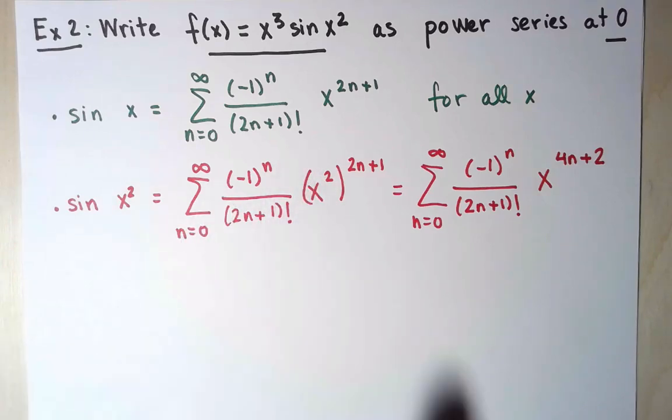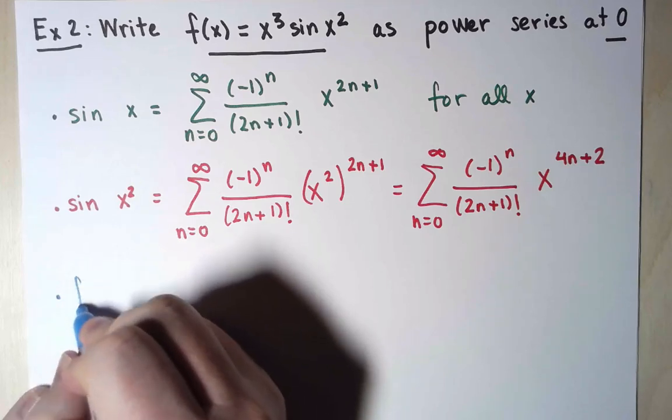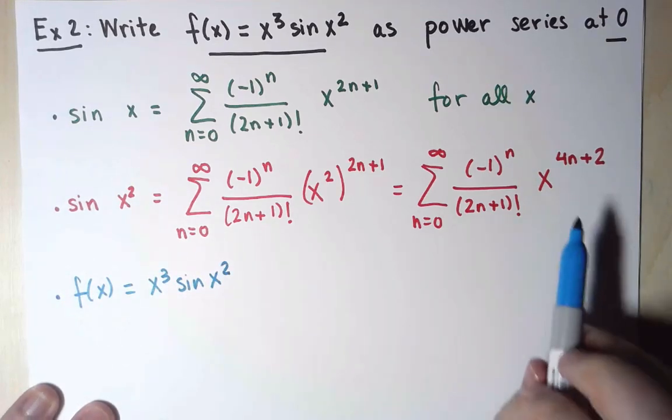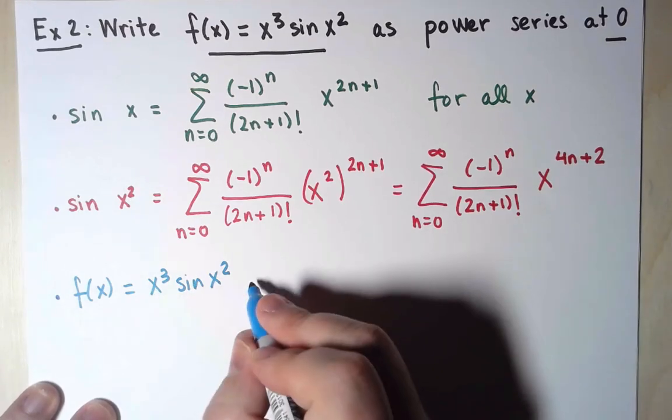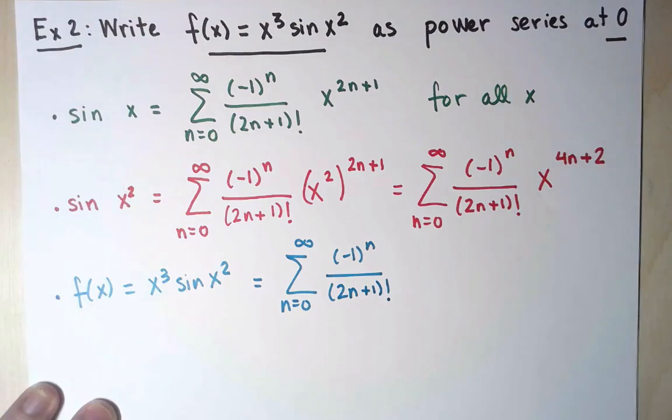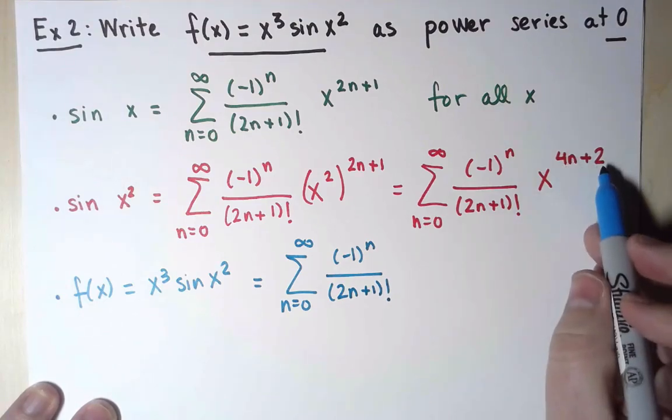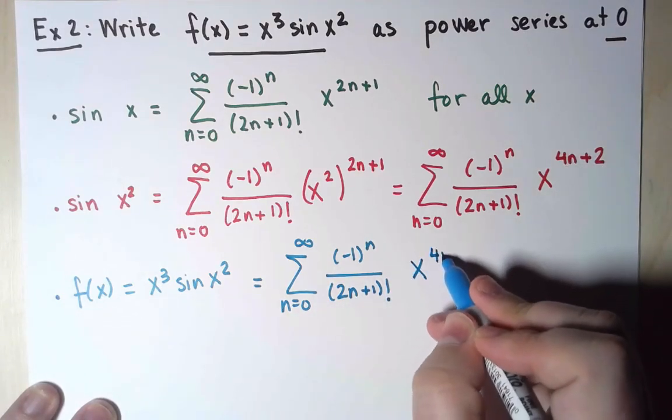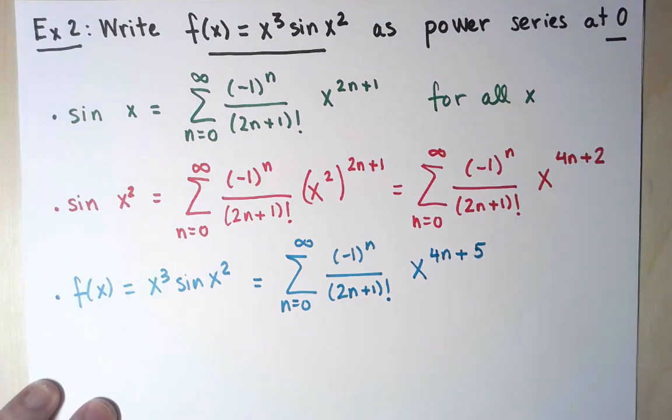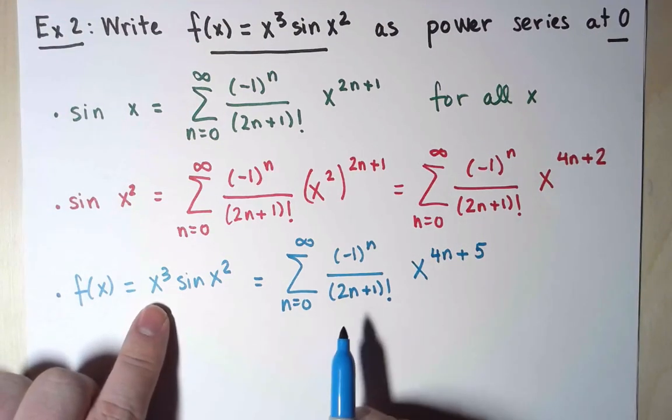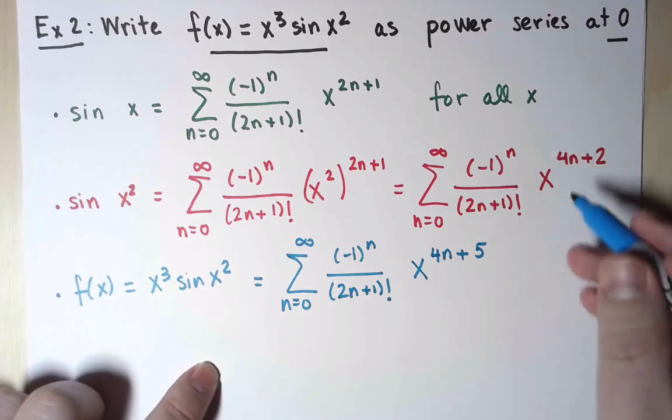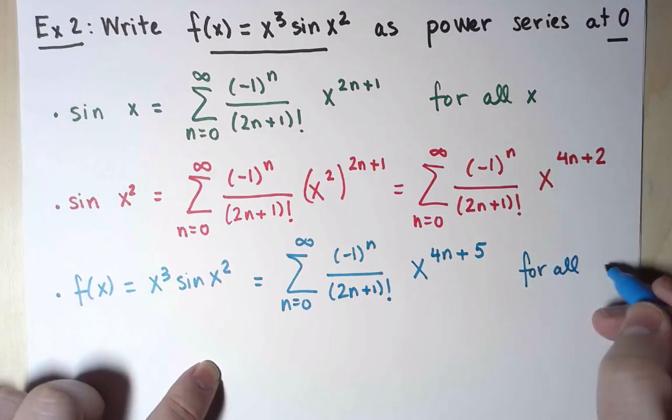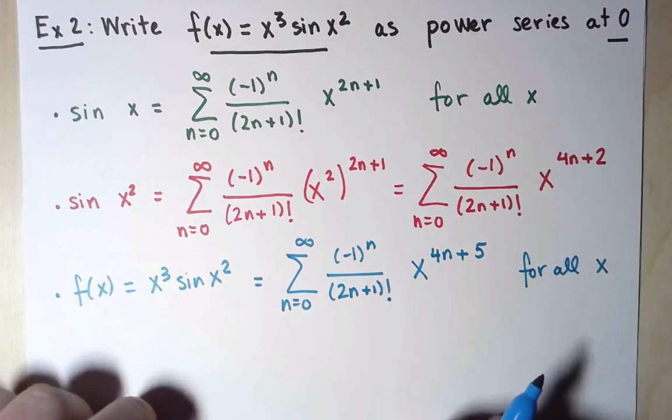And x squared to the 2n plus 1 exponent can be simplified as x to the 4n plus 2. Now, that is almost the function I'm trying to write as a power series, except I need to multiply it times x cubed. But if I think of this as an infinite polynomial, the way to multiply it by x cubed is multiply it term by term. And x to the 4n plus 2 times x cubed could simply be x to the 4n plus 5. And that's it! That's how I write this function as a power series centered at zero. Finally, since the original expansion was true for all x, and what we've done is legal, this new power series is also equal to the function for any real number x.